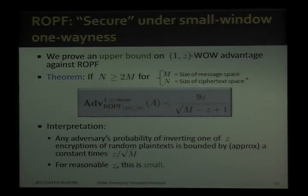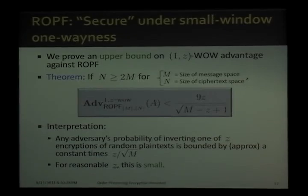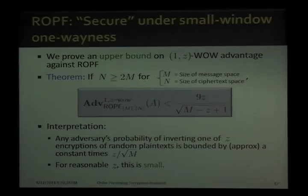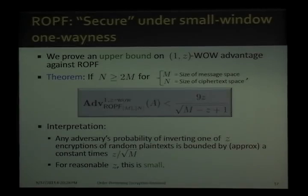The first result is that a random order-preserving function is secure under small-window one-wayness. We prove an upper bound on the 1Z window one-wayness advantage against ROPF. The upper bound is very clean and doesn't even depend on N, the size of the ciphertext space. The interpretation is that any adversary's probability of inverting one of Z encryptions of random plaintexts is bounded by approximately a constant times Z over the square root of M. For reasonable Z, this is small — hence why we say it's secure.